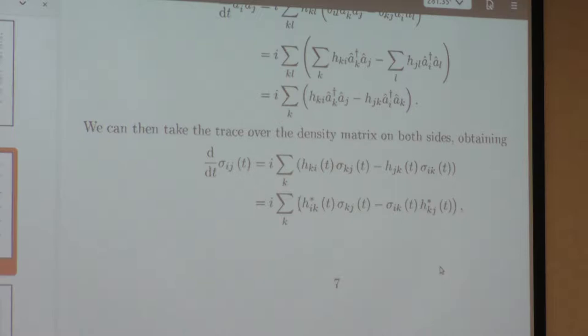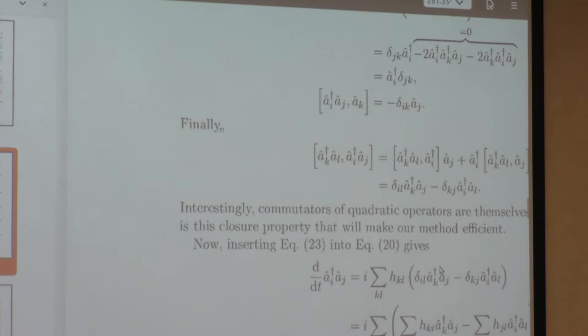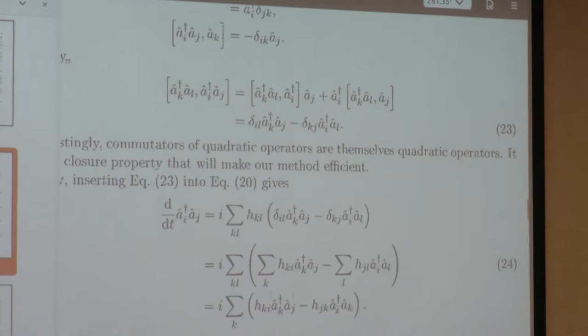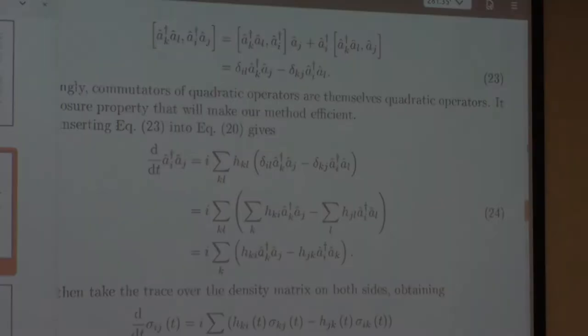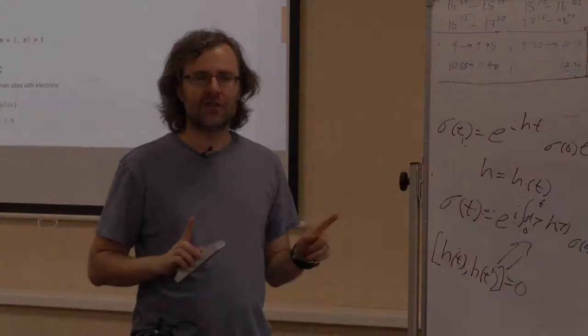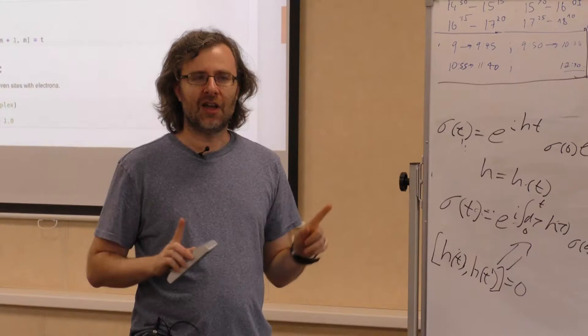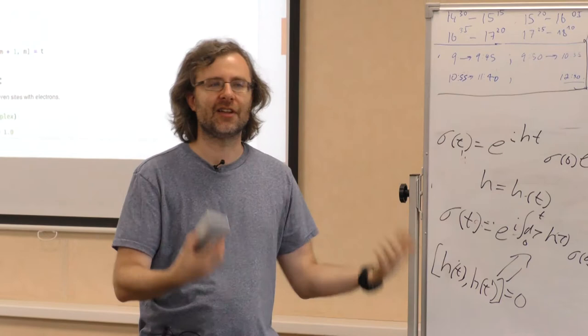With a non-quadratic Hamiltonian, you will no longer have a nice quadratic operator on the right-hand side — you'll have other terms. As you continue, you'll get more and more terms and the whole thing will explode exponentially. The number of operators you need will explode exponentially, you'll get infinite-order operators, and everything goes to crap. That's where many-body physics becomes hard. This trick only works for non-interacting systems.